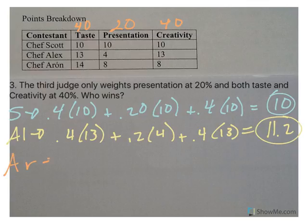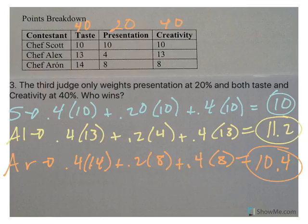Then we go to Chef Aaron, 40% times 14 plus 20% times 8 plus 40% times 8 gives Aaron a score of 10.4. So according to Chef 3, Alex is the winner.